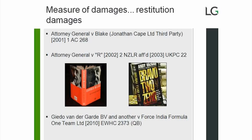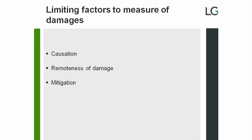Turning to the factors which might limit damages flowing from a breach — first, causation. The claimant must show a causal connection between the breach and the loss, and the court generally relies on common sense to guide its decisions. On remoteness of damages: without legal restraint a victim could point to all loss resulting from a breach however improbable or unpredictable, but common law states that a man is not to be held liable for the infinite consequences of his wrongful act.